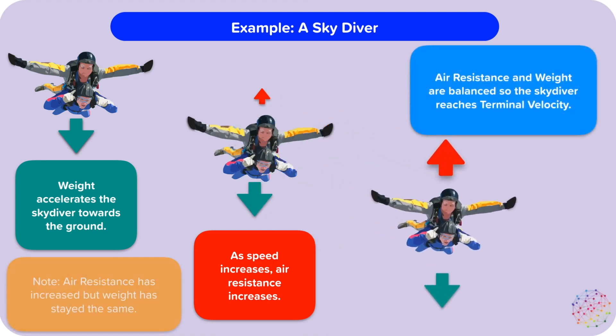Eventually, air resistance will increase so much that it's equal to, but in the opposite direction from, the weight. Air resistance and weight are balanced, so the skydiver reaches terminal velocity. The skydiver is still falling downwards, but now they're falling at a constant speed. Remember, air resistance has increased, but weight has stayed the same.